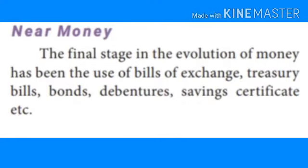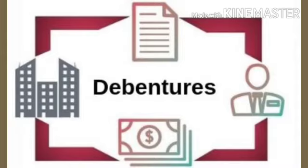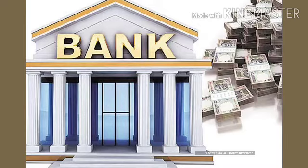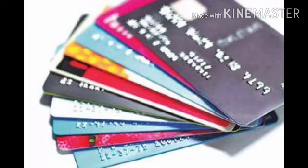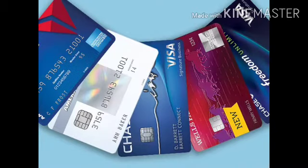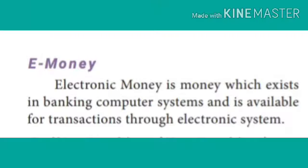Near Money: The final stage in the evolution of money has been the use of bills of exchange, treasury bills, bonds, debentures, savings certificates, etc. Modern forms of money: First, plastic money — the latest type of money is plastic money in the form of credit cards and debit cards; they aim for cashless transactions. Second, e-money — electronic money is money which exists in banking computer systems and is available for transactions through electronic systems.